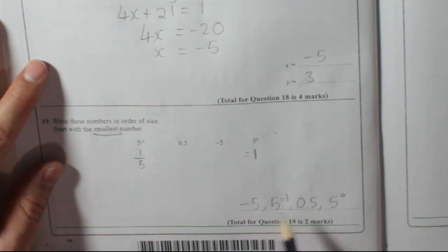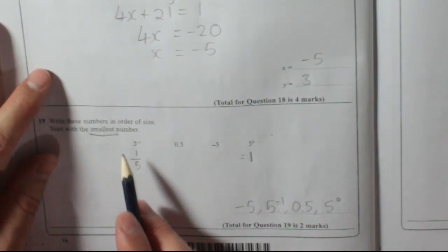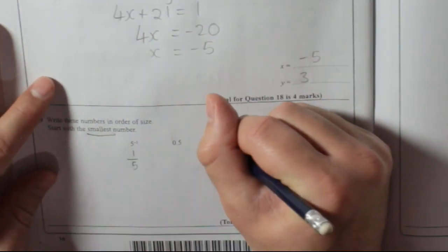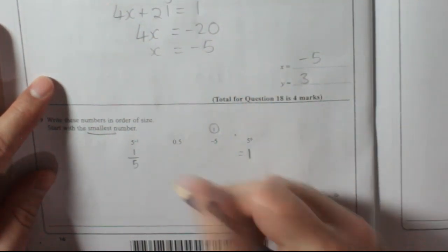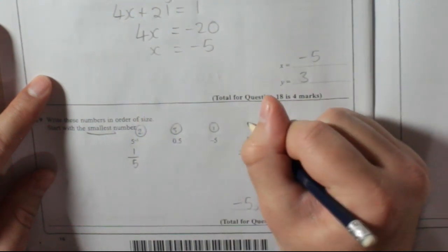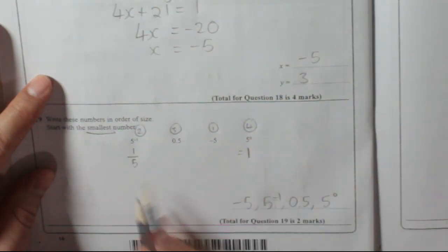You might have seen that it's quite easy to make a mistake there. So you could number them if you wanted to. So because I said that was the smallest, that's number 1. And then number 2, number 3, number 4, and then write them down like that.